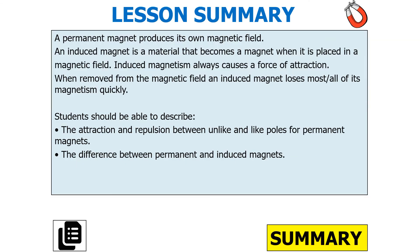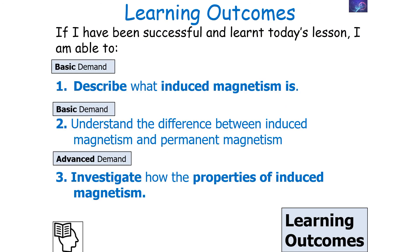To summarize today's lesson: a permanent magnet produces its own magnetic field, whilst an induced magnet is a material that becomes a magnet when placed inside another magnetic field. Induced magnetism always causes a force of attraction, and when removed from the magnetic field, an induced magnet will lose most or all of its magnetism. You should be able to describe the attraction and repulsion between unlike and like poles for permanent magnets, understand the difference between permanent and induced magnets, and investigate the properties of induced magnetism.